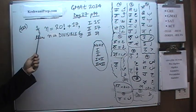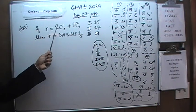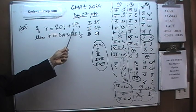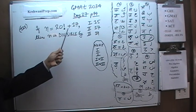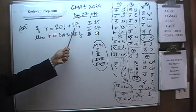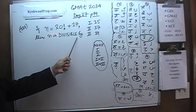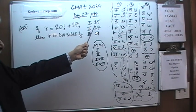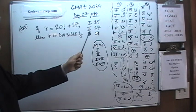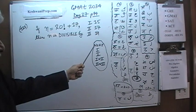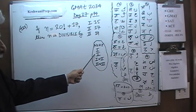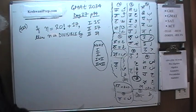We are told that if n is equal to 20 factorial plus 17, then n is divisible by — and we have three choices: n is divisible by 15, 17, or 19. And here are the answer choices: None, 1 only, 2 only, 1 and 2, or 2 and 3. Go ahead, do it yourself.